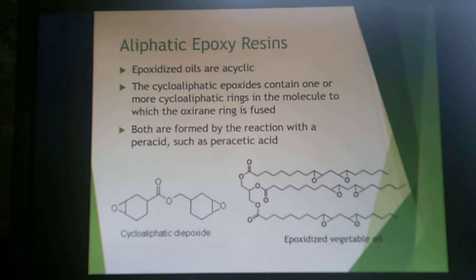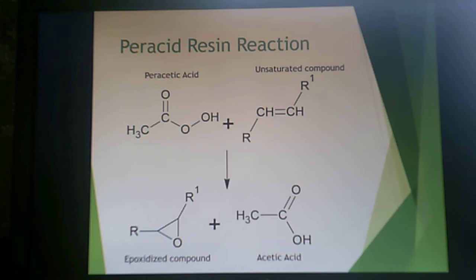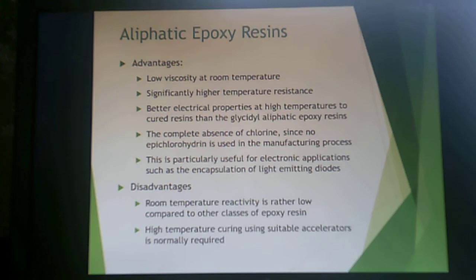Aliphatic epoxy resins are another type — while DGEBA-type epoxies have aromatic groups, aliphatic versions are also available. Epoxidized oils can be made, including acyclic epoxidized vegetable oils, and cycloaliphatic epoxies contain one or more cycloaliphatic rings without unsaturation to which the oxirane is fused. Both are formed by the reaction of a peracid such as peracetic acid with an unsaturated compound, yielding an epoxidized compound and acetic acid.